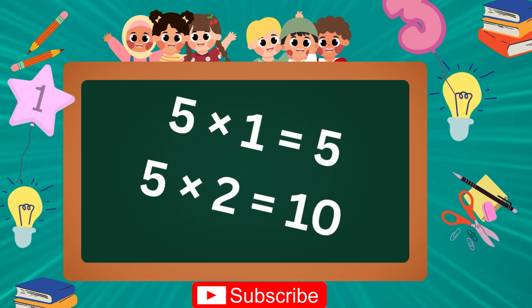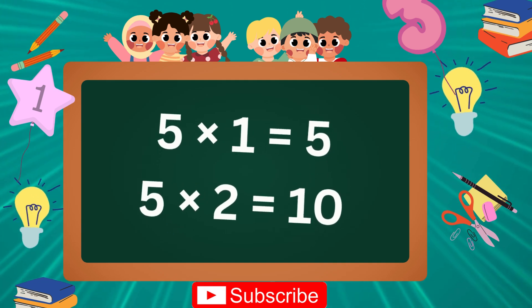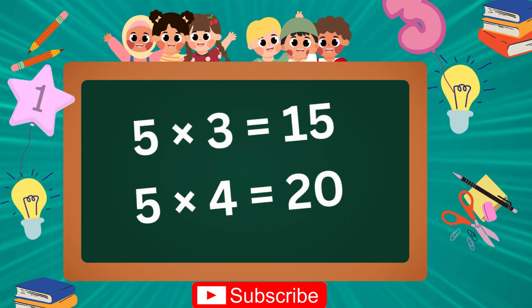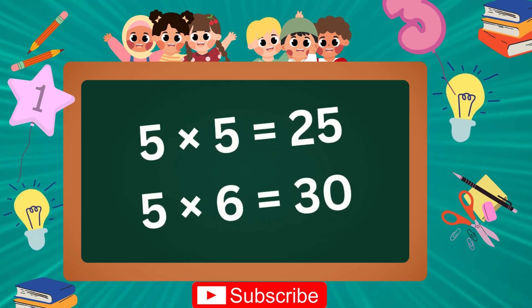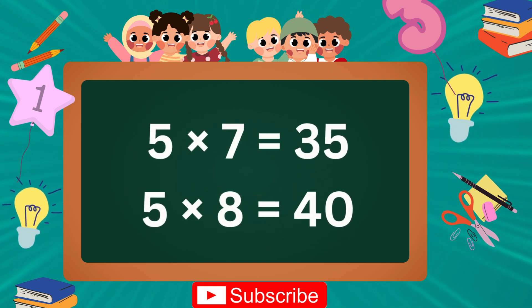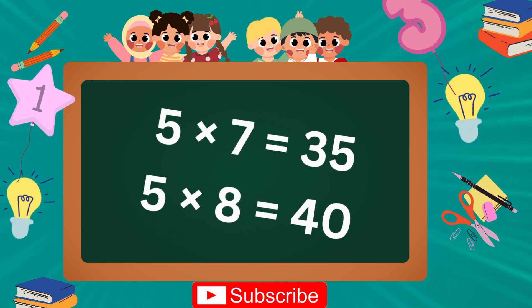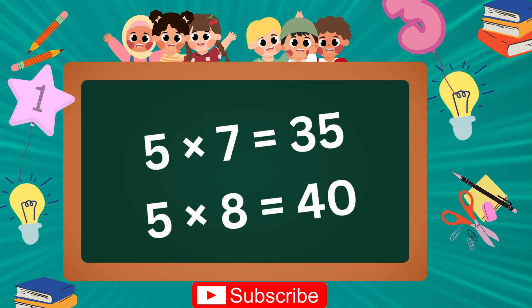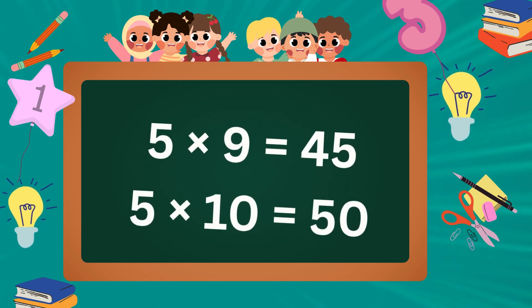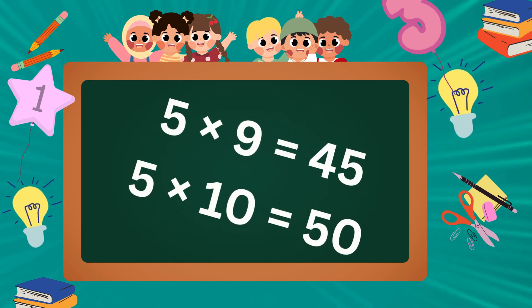5 1s are 5, 5 2s are 10, 5 3s are 15, 5 4s are 20, 5 5s are 25, 5 6s are 30, 5 7s are 35, 5 8s are 40, 5 9s are 45, 5 10s are 50.